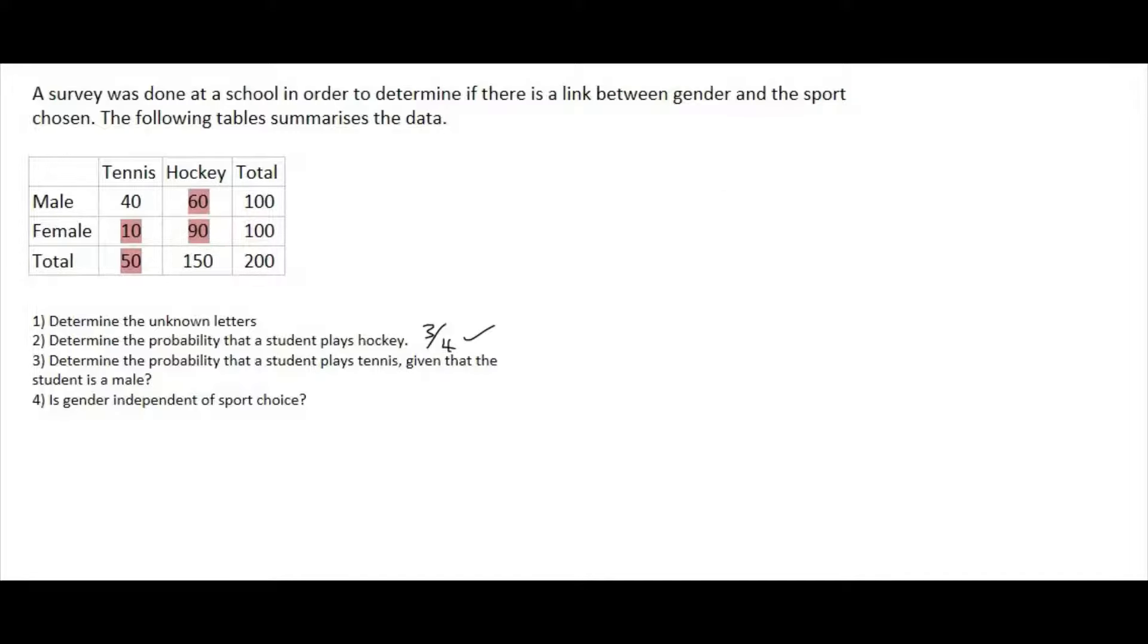Number three, determine the probability that a student plays tennis, given that the student is a male. That given word, we encountered that a while back in Venn diagrams. It is extremely important. It says, given that the student is a male, okay, so we only look at the males for this question, which is that row over there. So there's only 100 of them. We're not going to say 200 anymore.